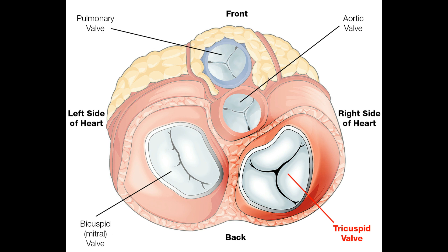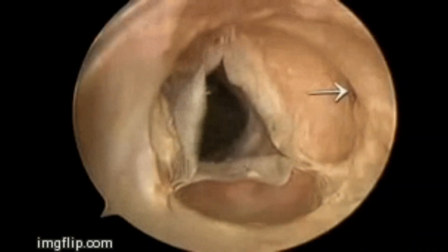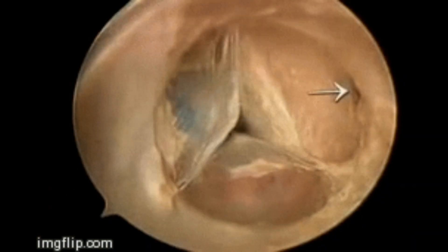The last wall is the aortic wall, also considered a semilunar wall, located at the entry of the aorta. During ventricular relaxation, it prevents blood from moving from the aorta into the left ventricle.